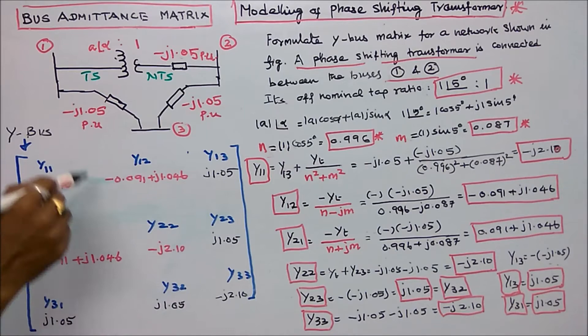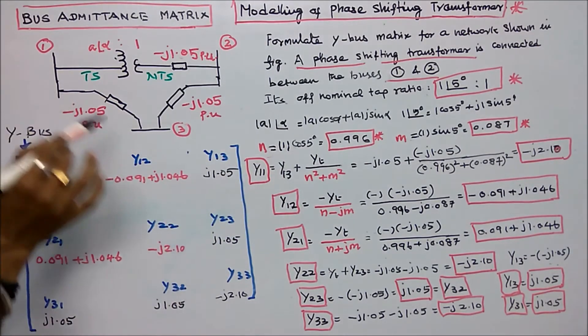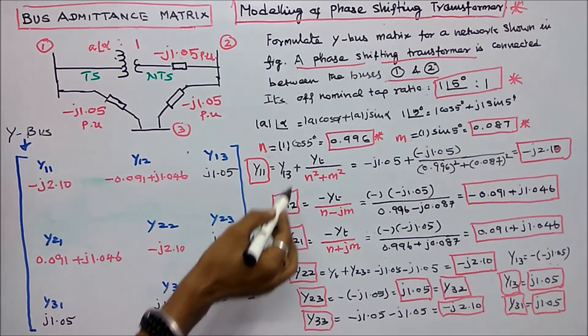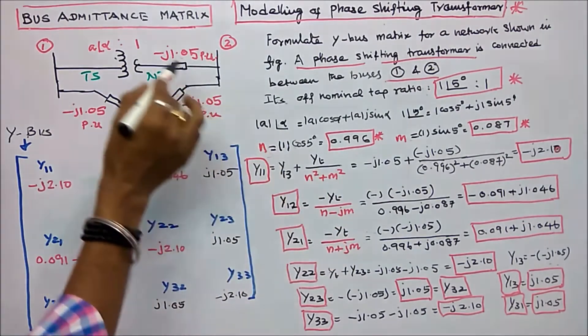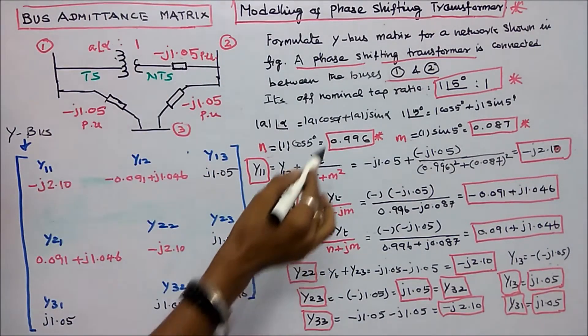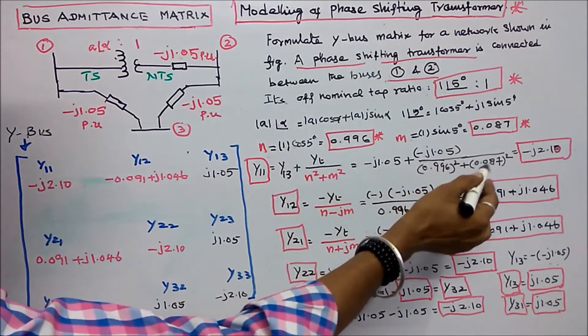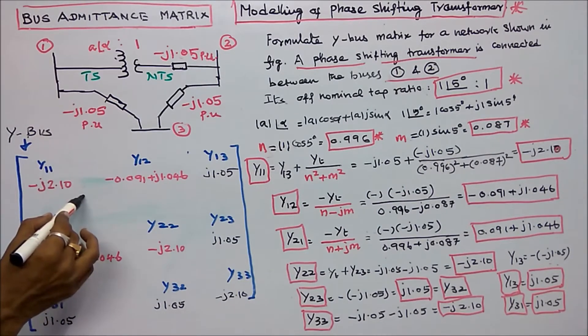Next, I have to find the y11. y11 is equal to y13, this admittance minus j 1.05 plus yt divided by n square plus n square. Here yt is equal to minus j 1.05. n is equal to 0.996 the whole square plus 0.087 whole square. That is equal to minus j 2.10 y11.